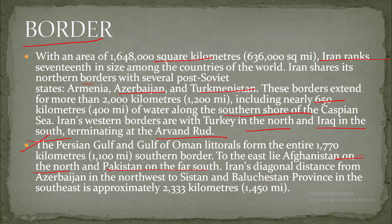Iran's diagonal distance from Azerbaijan in the northwest to Sistan and Balochistan province in the southeast is approximately 2,333 kilometers.